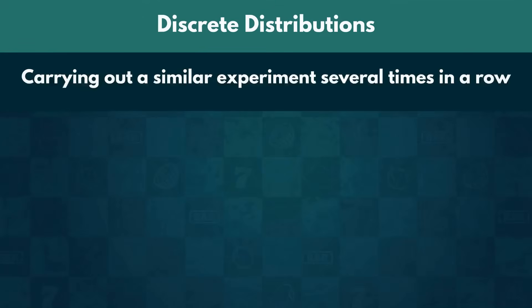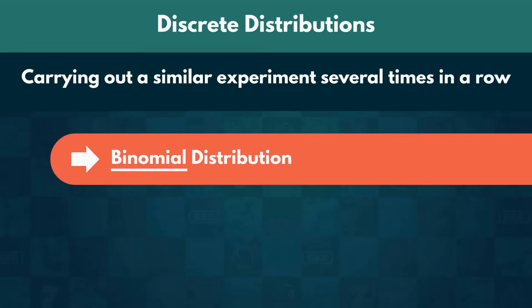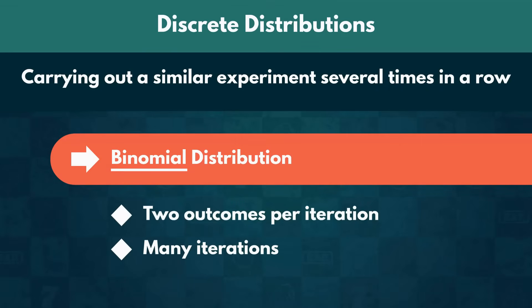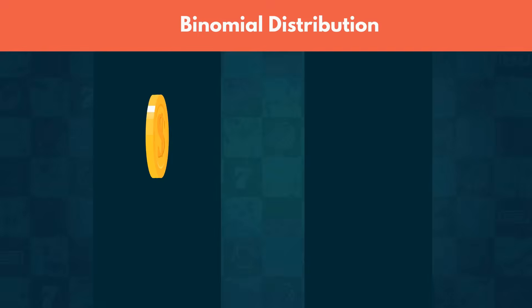Now, if we carry out a similar experiment several times in a row, we are dealing with a binomial distribution. Just like the Bernoulli distribution, the outcomes for each iteration are two, but we have many iterations. For example, we could be flipping the coin we mentioned earlier three times and trying to calculate the likelihood of getting heads twice.